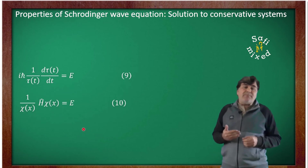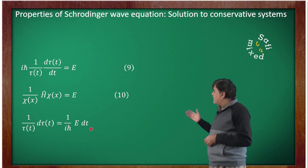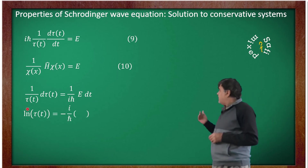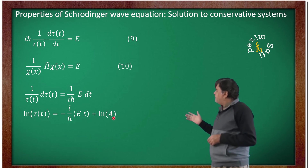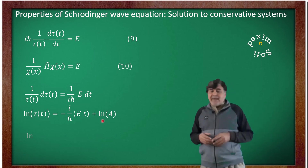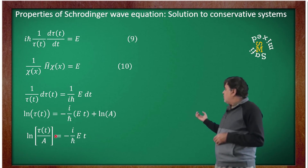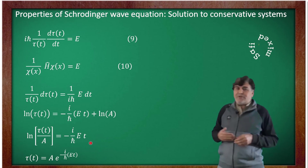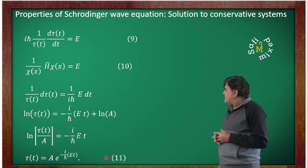Let us first solve the time equation. I can rewrite that equation as one over τ(t) times dτ(t) equals one divided by iota h-bar times E times dt. Integrating this equation gives: log of τ(t) equals minus one divided by iota h-bar times E times t plus log of A, where A is the integration constant. Rearranging and exponentiating, we get: τ(t) equals A times exp(minus iota over h-bar times E times t).